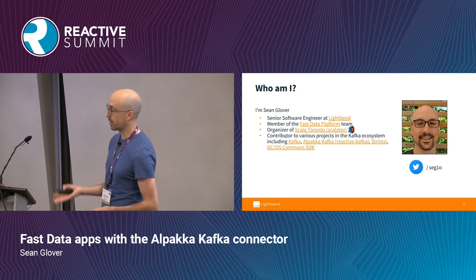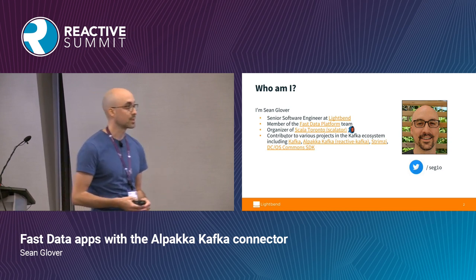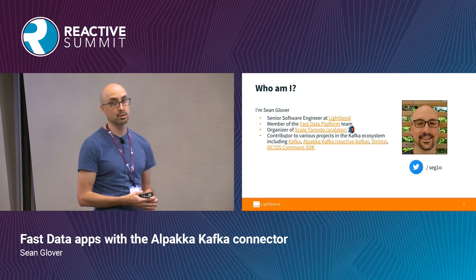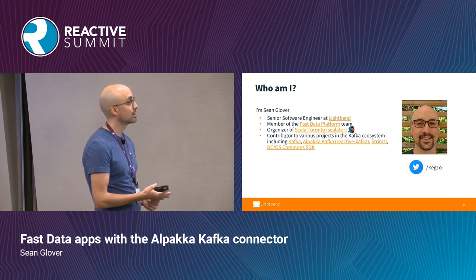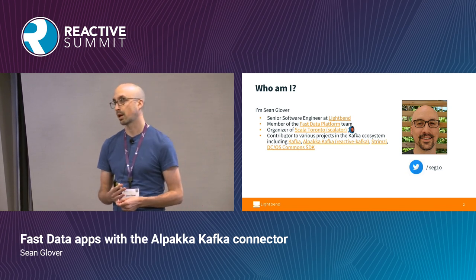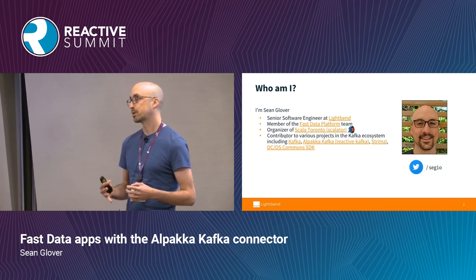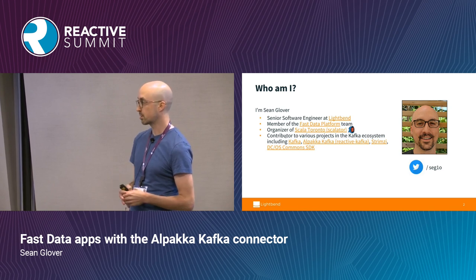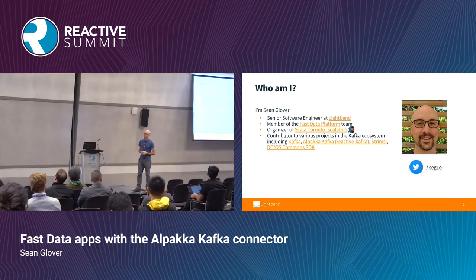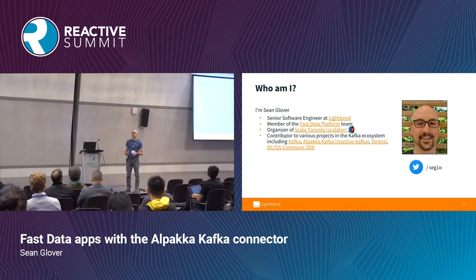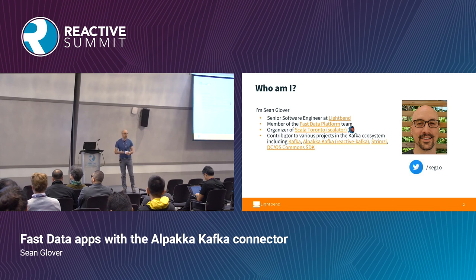I've also worked on Alpaca Kafka, which is what we're going to talk about today — it was formerly known as Reactive Kafka, which you may have heard of. Stream Z is a neat new project; it's basically Kafka on Kubernetes, implemented as a JVM operator-based framework. I'm heavily involved in that right now. DCOS Commons SDK is a similar thing for DCOS, helping to run the DCOS Kafka package on Apache Mesos. Fast Data Platform runs on DCOS, so that's why I've been involved in that too.